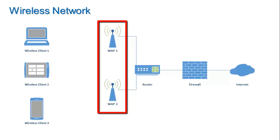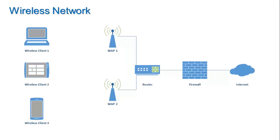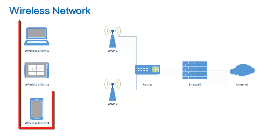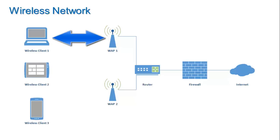A wireless access point is a hardware device that allows properly equipped computing devices to connect wirelessly to a network. WAPs are typically physically connected to a wired network via a network router. One of the primary components of a wireless access point is a radio transceiver, which is a device that allows for both the transmission and reception of radio signals. Client devices wishing to join a wireless network also have a transceiver, and in this way, two-way wireless communication between a client and a WAP becomes possible.